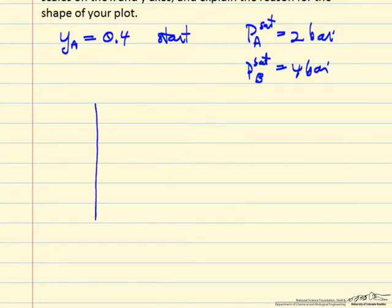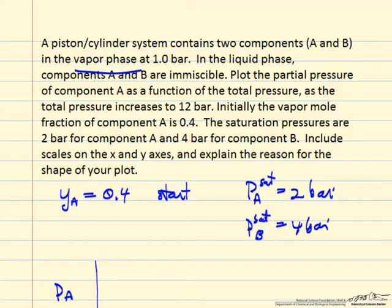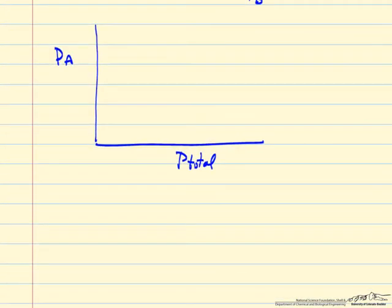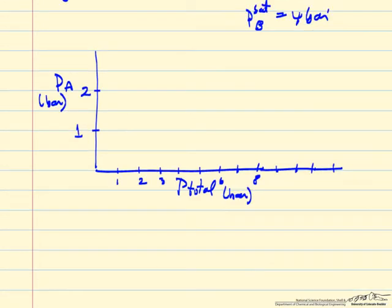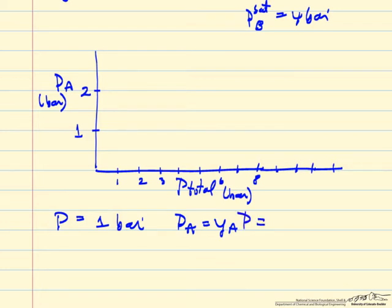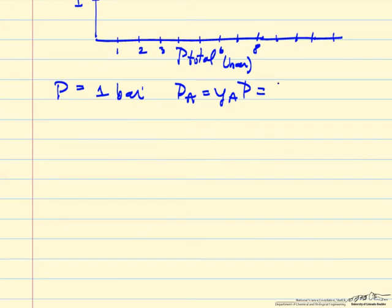So the question is we want to plot the partial pressure of A versus the total pressure in the system, going up to a total pressure of 12 bar. We start at a total pressure of 1 bar, so the partial pressure of A equals the mole fraction of A times the total pressure. With a mole fraction of 0.4, we're at 0.4 bar initially.